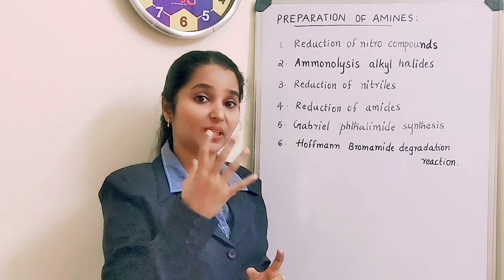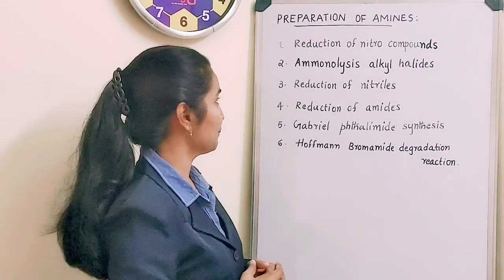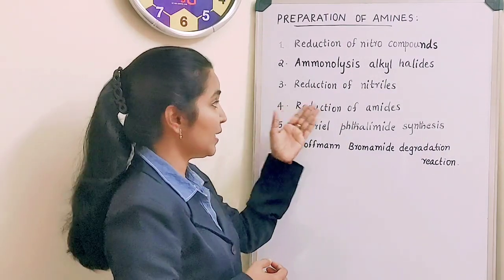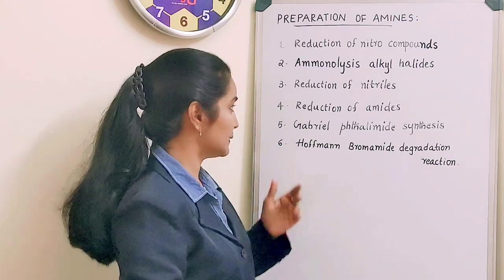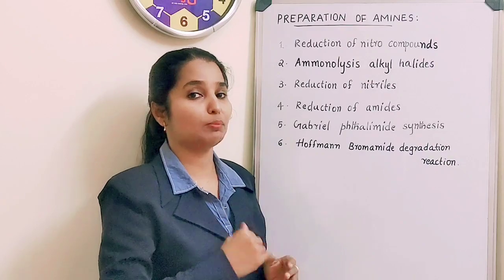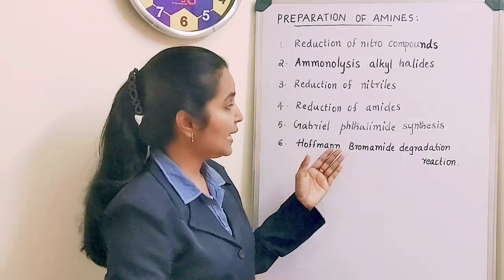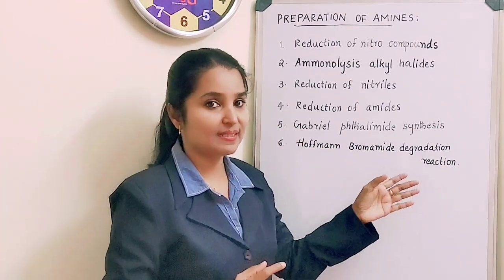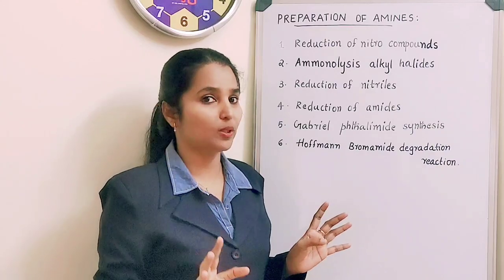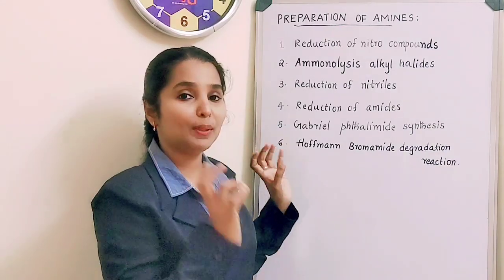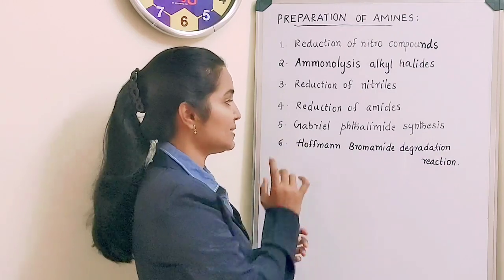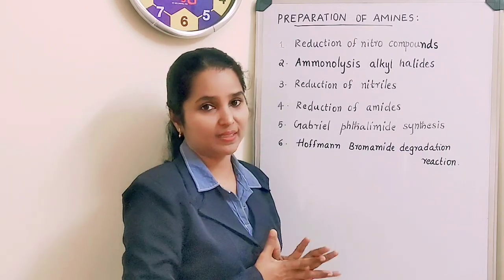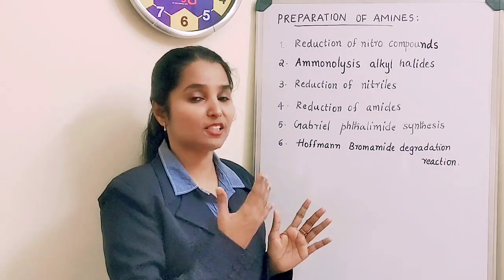Any nitro compound can be reduced to the corresponding amine. Then we have aminolysis of alkyl halides (RX), reduction of nitriles, and reduction of amides. We also have two name reactions: Gabriel phthalimide synthesis and Hoffmann bromamide degradation reaction. Name reactions are very important from an exam point of view.